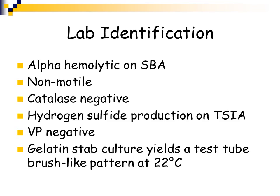Erysipelothrix is non-motile — key because Listeria is motile. It is catalase negative, whereas Listeria is catalase positive. It produces hydrogen sulfide, so it will turn triple sugar iron agar black. TSI agar allows you to examine fermentation of glucose, lactose, and sucrose, as well as gas and hydrogen sulfide production. Erysipelothrix is Voges-Proskauer negative. On a gelatin stab culture incubated at 22 degrees Celsius, it will produce a brush-like pattern.